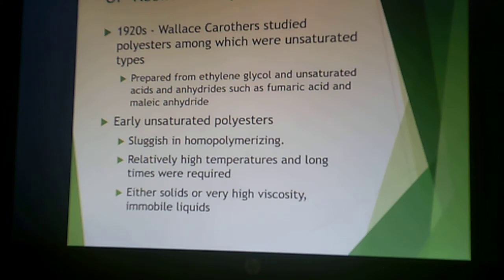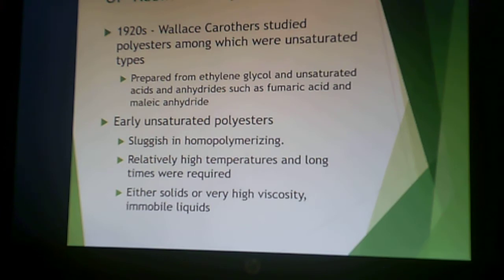Some steps in unsaturated polyester resin history: Wallace Carothers first started unsaturated polyester resin work in the 1920s, preparing these from ethylene glycol and unsaturated acids and anhydrides — specifically fumaric acid and maleic anhydride. However, these early unsaturated polyesters were relatively sluggish during homopolymerization, required high temperature and long polymerization time, and the resulting products were either solids or very high viscosity, immobile liquids — not terribly feasible for applications.